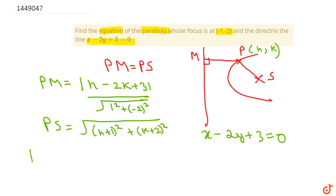So PM is equal to PS, i.e. |h - 2k + 3| / √5 is equal to √[(h + 1)² + (k + 2)²]. Okay?